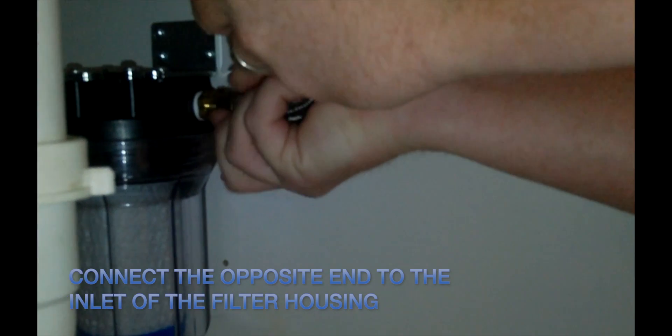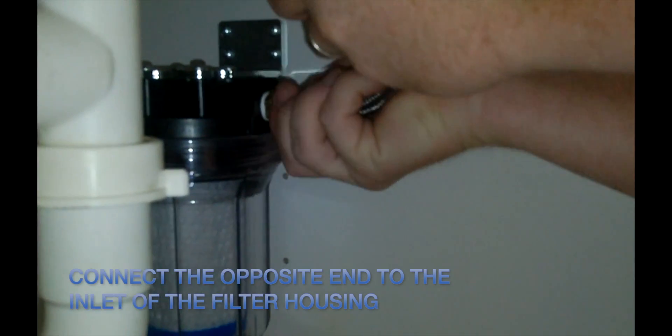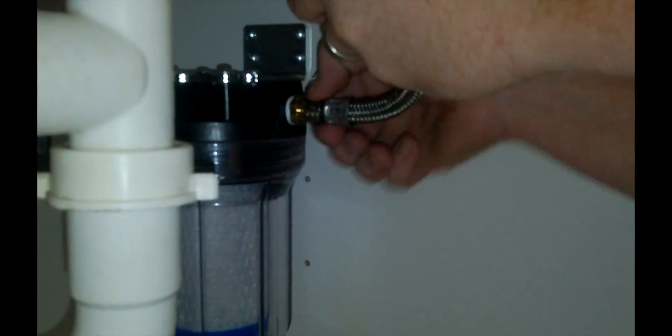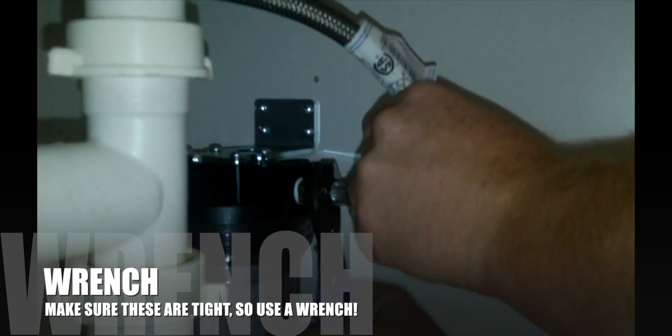Now attach the tubing to the filter housing inlet. Again, don't forget to use a wrench.